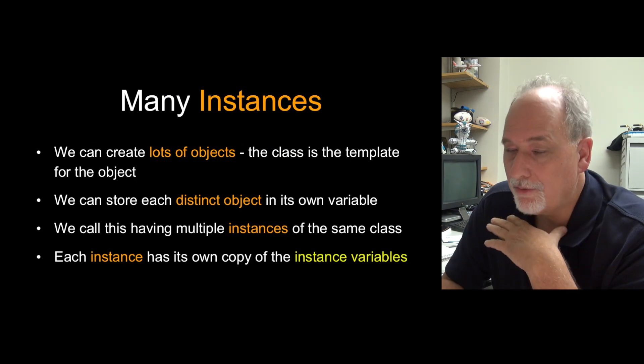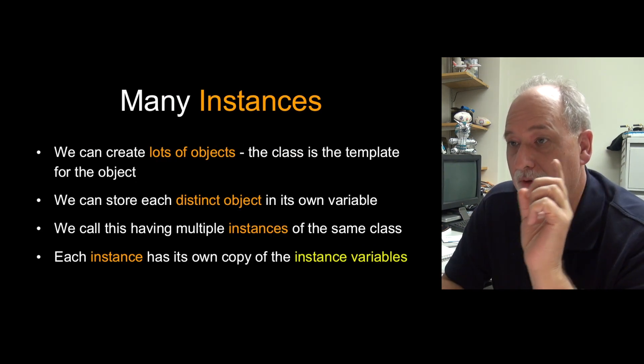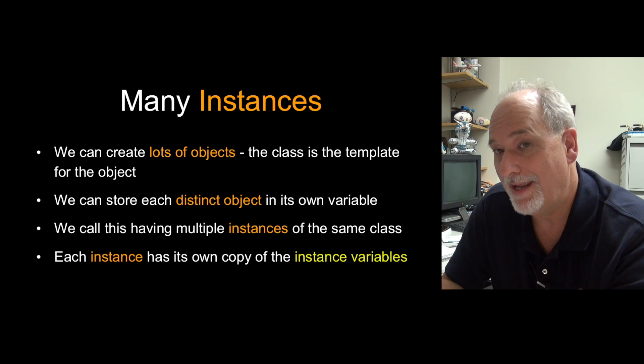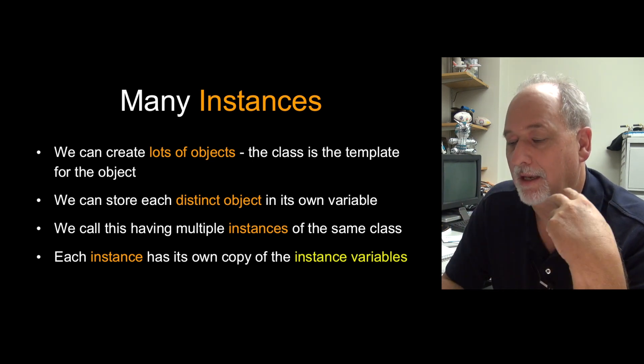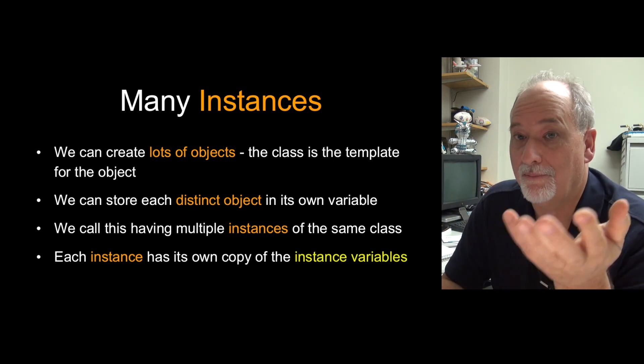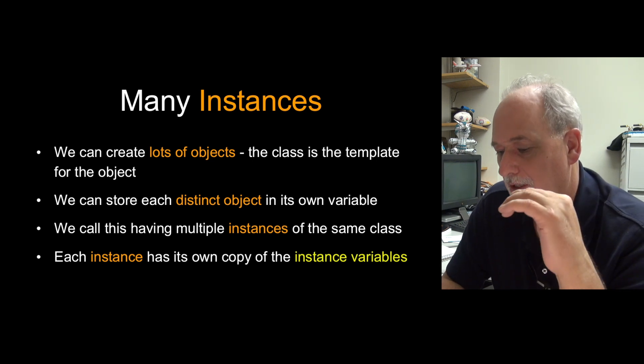So we can create lots of instances. Everything we've done so far is we make a class and then we create one instance, one object. And each of these objects ends up being stored in its own variable. We have a variable an and we've been using it.